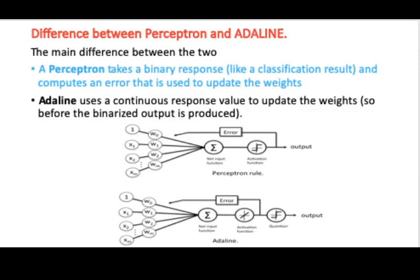So what makes an ADALINE neural network different from a perceptron? If you talk of a perceptron, a perceptron normally takes a binary response. When I say a binary response, what it basically does is something like a classification result where it computes the error and that error is used to update the weights. If you talk of an ADALINE neural network, you have something called the continuous response value. This continuous response value will update the weights, and this basically differentiates a perceptron from an ADALINE neural network.